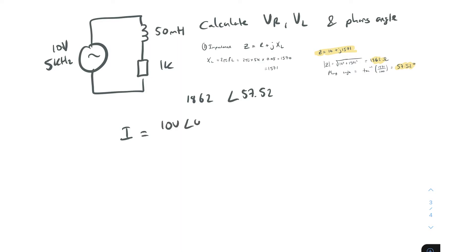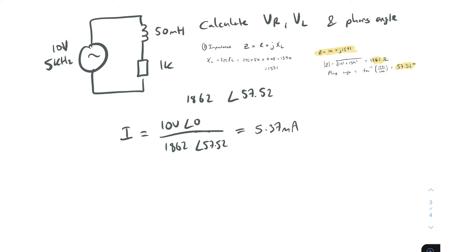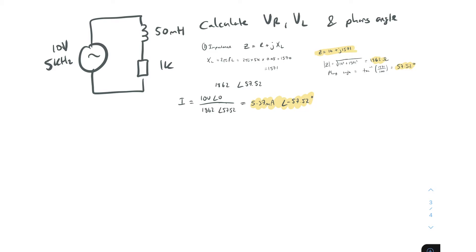To find the current, it's the voltage divided by the impedance: 10V ∠ 0° divided by 1862 ∠ 57.52°. In polar form we simply divide the magnitudes and subtract the angles, which gives us 5.37 milliamps at an angle of −57.52°. This is our circuit current.